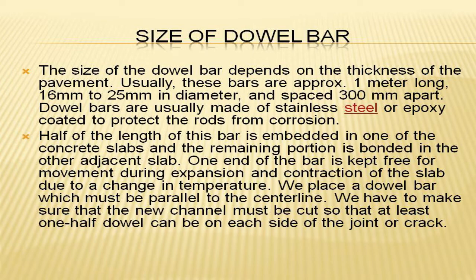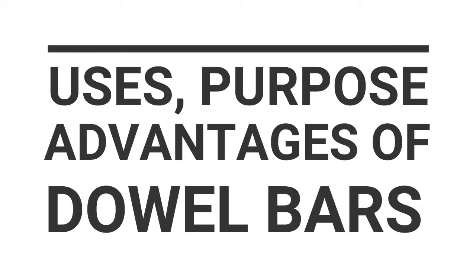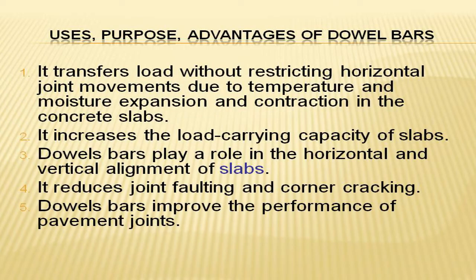When placing a dowel bar, it must be parallel to the centerline. The channel must be cut so that at least one half of the dowel can be on each side of the joint or crack.